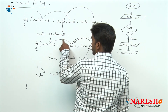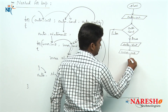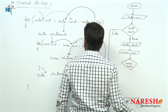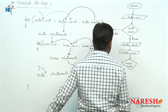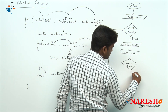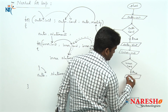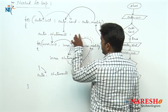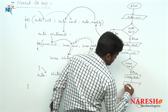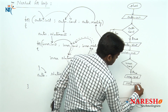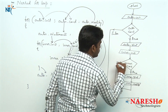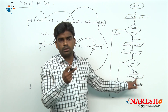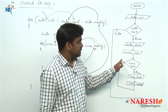After inner initialization, now inner condition is checked. If inner condition is true, the inner statements execute. After inner statements execution, inner modify runs and then inner condition is checked again. Here the loop will repeat — if condition is true, inner statements execute, then modify, then inner condition again.